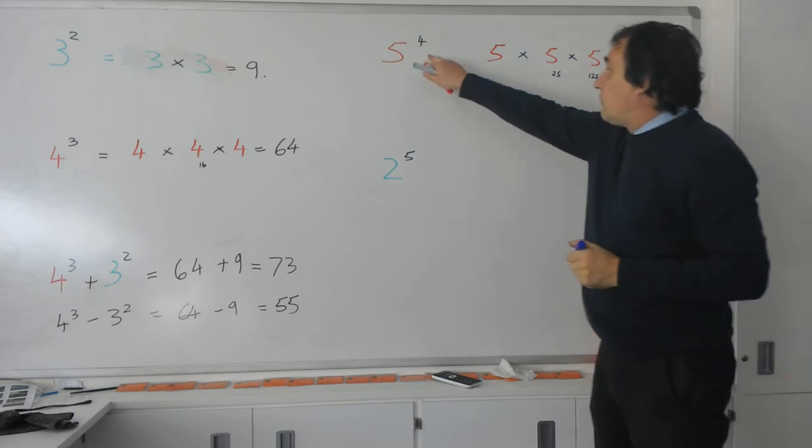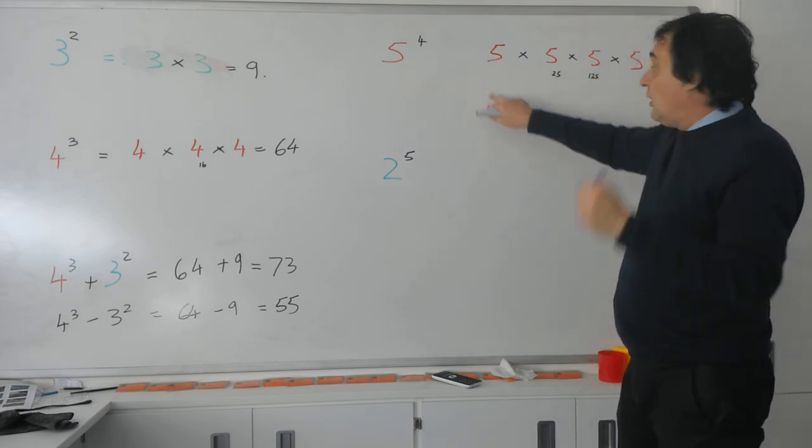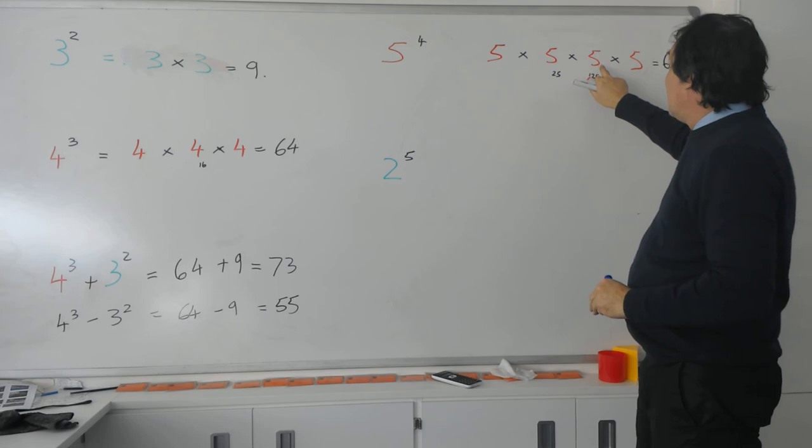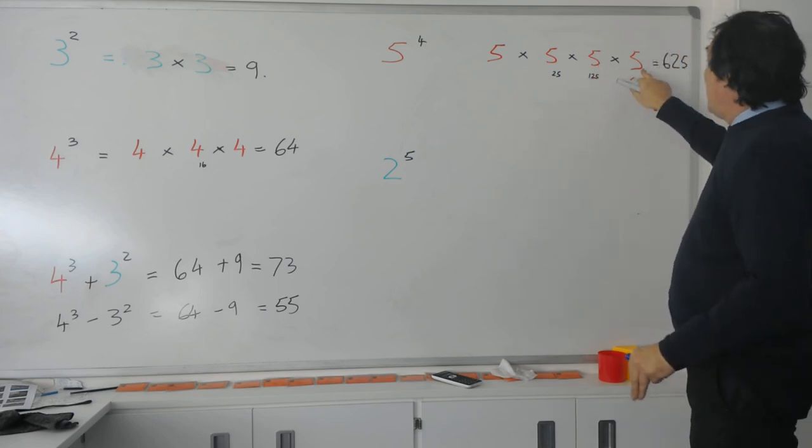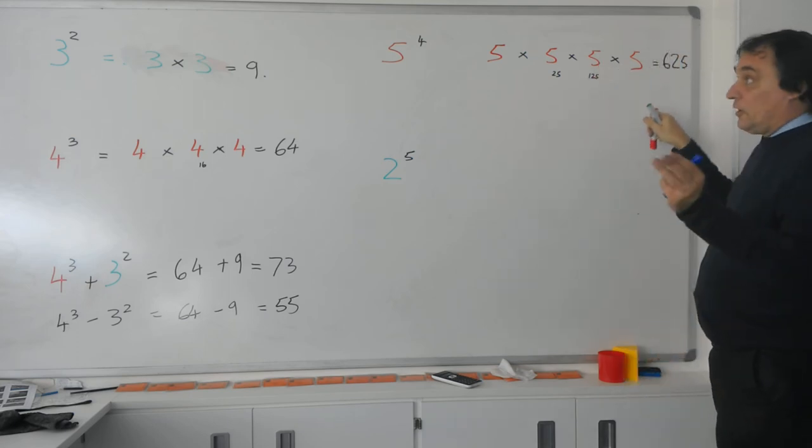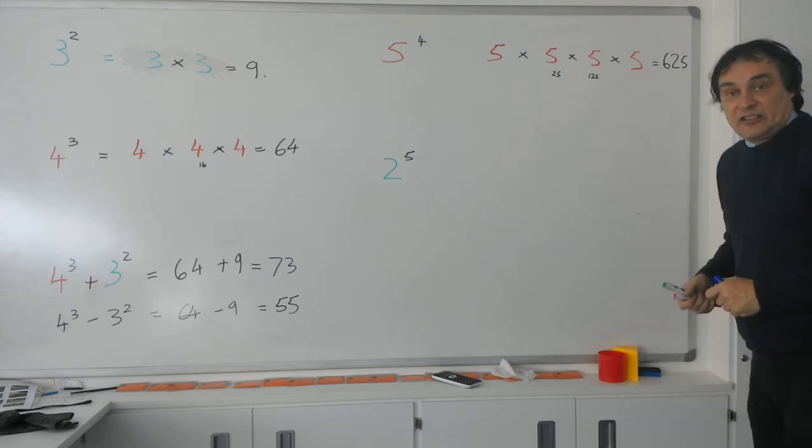So, remember, 5 raised to the power of 4, 5, once, times 5, twice, times 5, 3 times, times 5, 4 times, 5 to the 4, gives us 625.